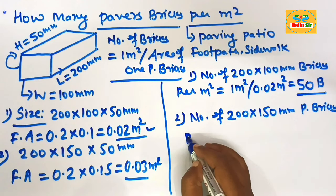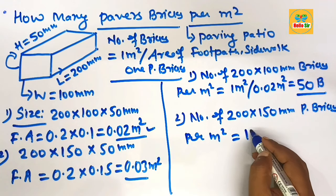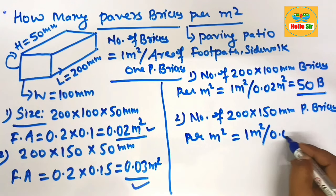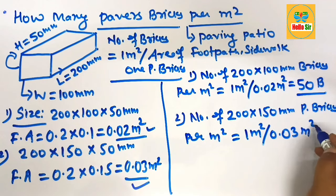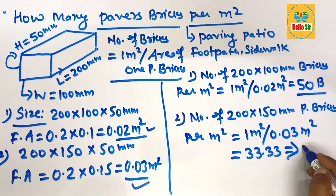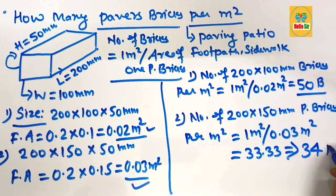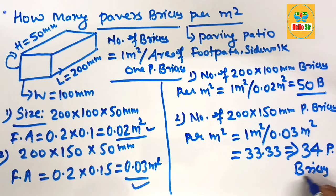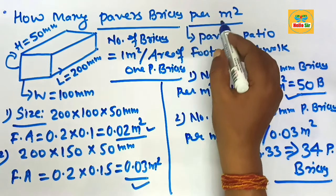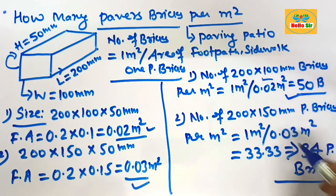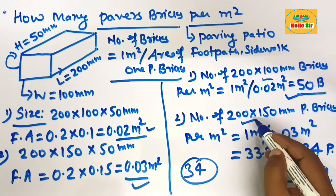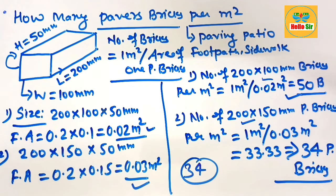Now calculate the number of 200 mm by 150 mm paving bricks per square meter. One square meter divided by the area of one brick (0.03 m²) gives approximately 33.33, which rounds up to about 34 paving bricks. So you need approximately 50 bricks per square meter for the first size, and approximately 34 bricks per square meter for the second size. Thank you.